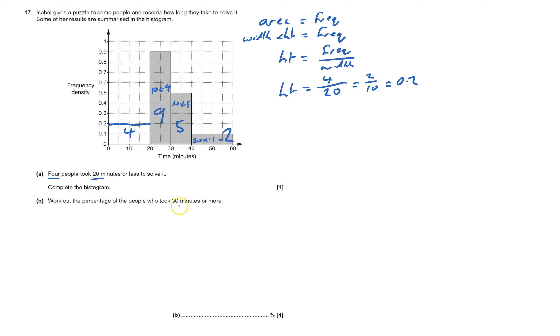So the percentage of people who took 30 minutes or more - I'll just put the working in: 5 plus 2 over all of them, 4 plus 9 plus 5 plus 2. And that's a fraction that's 7 over 20.